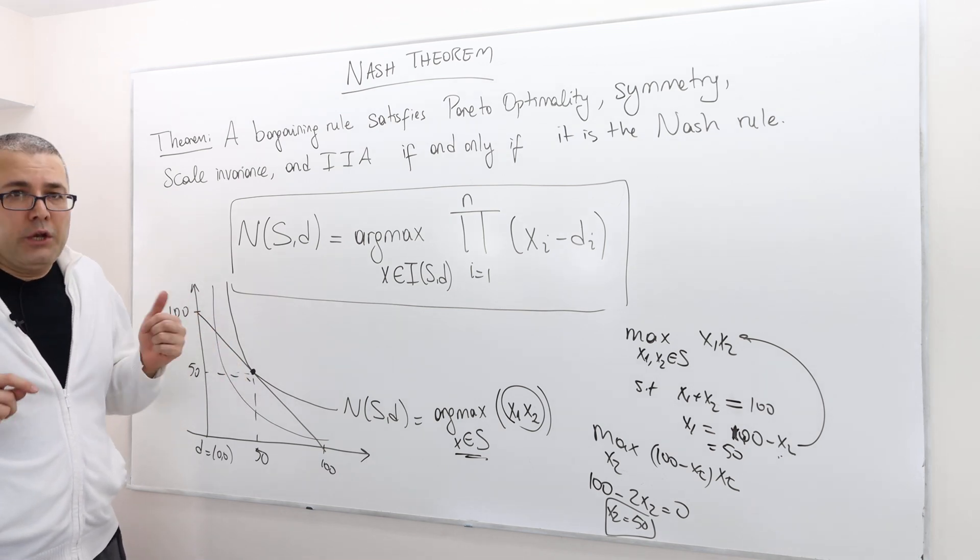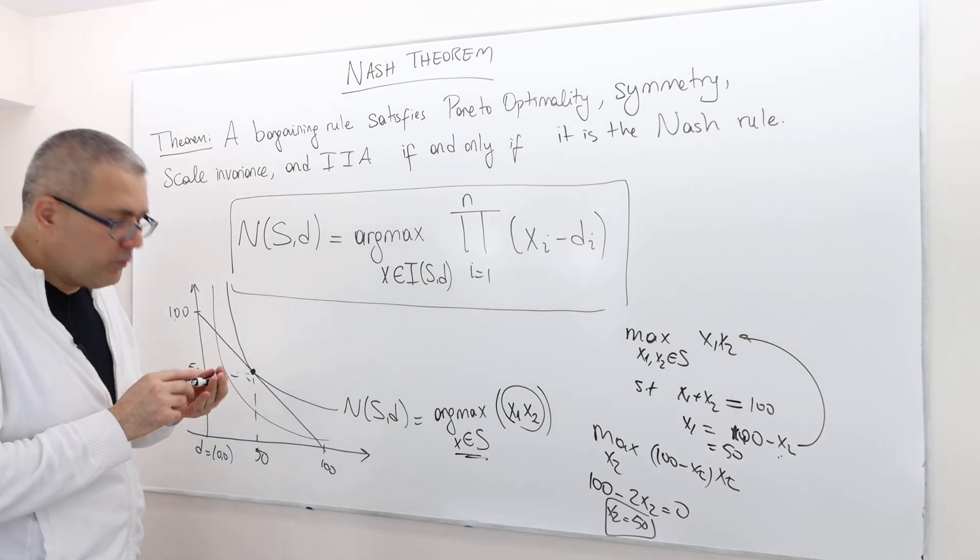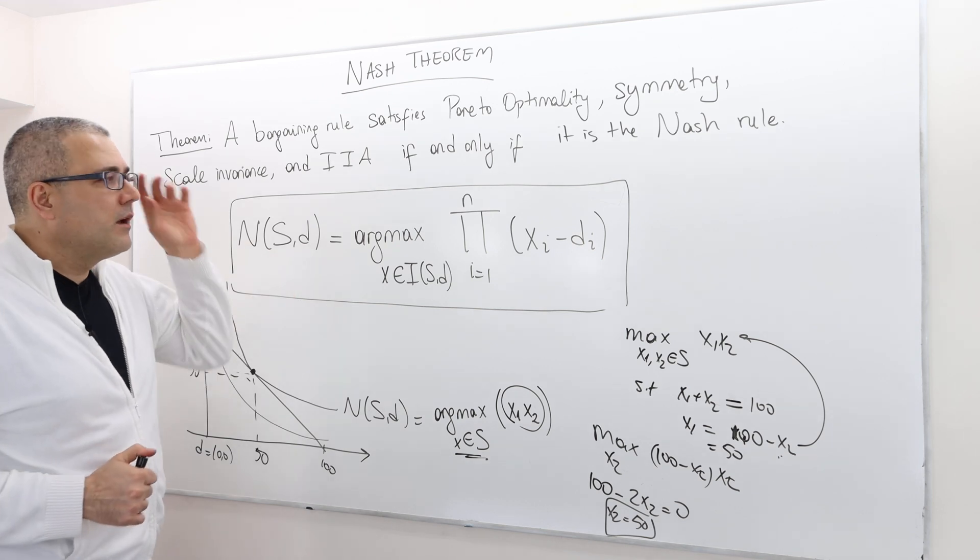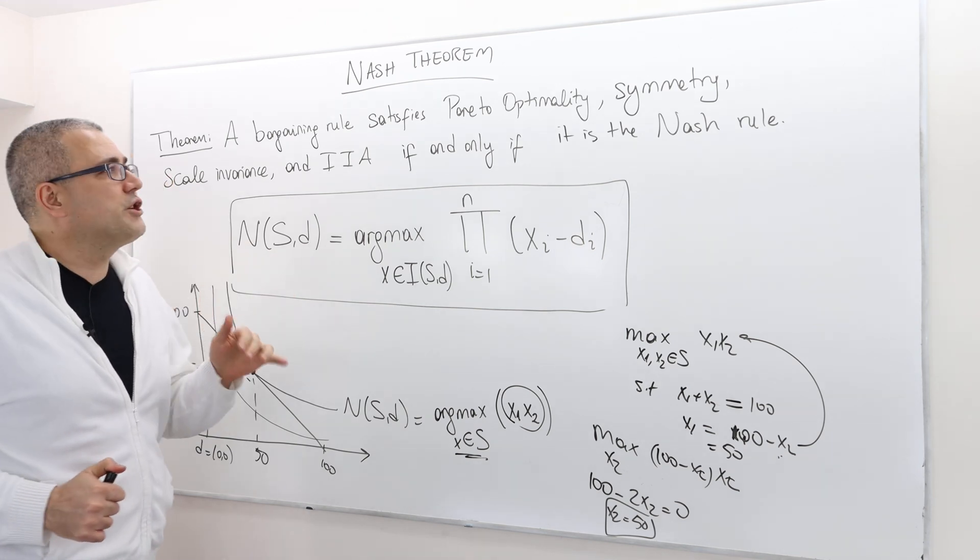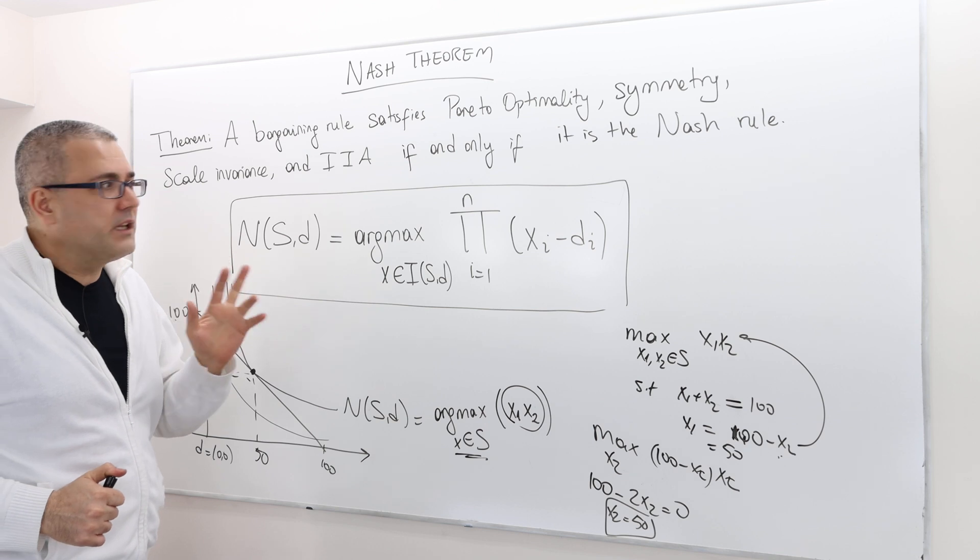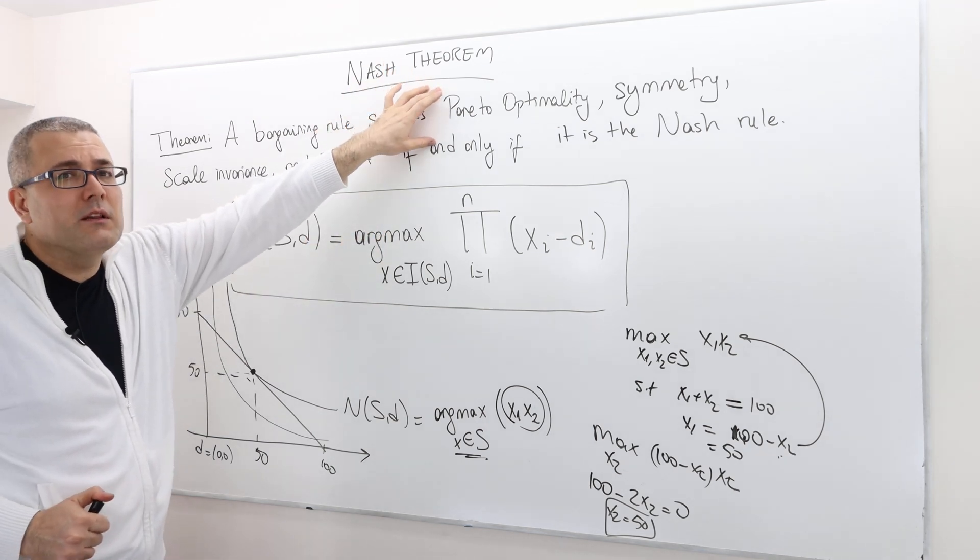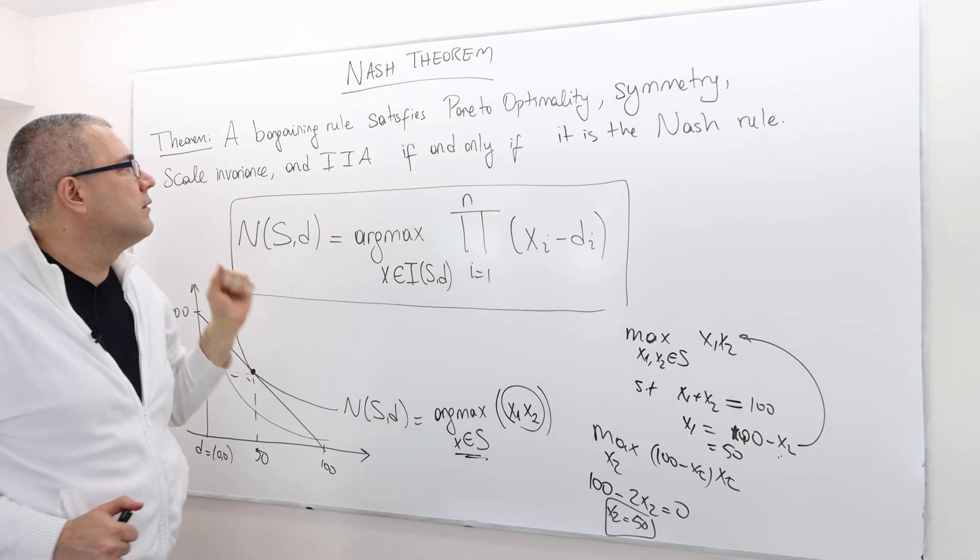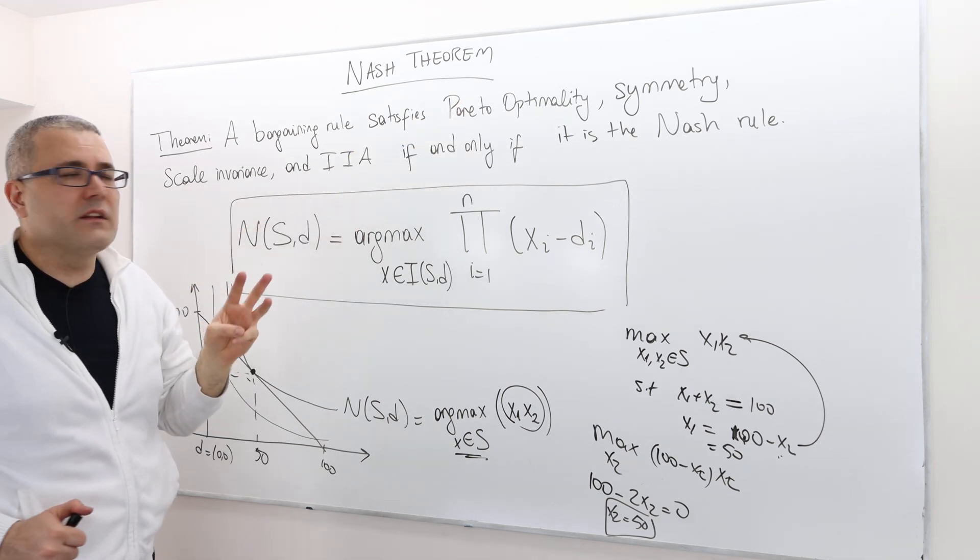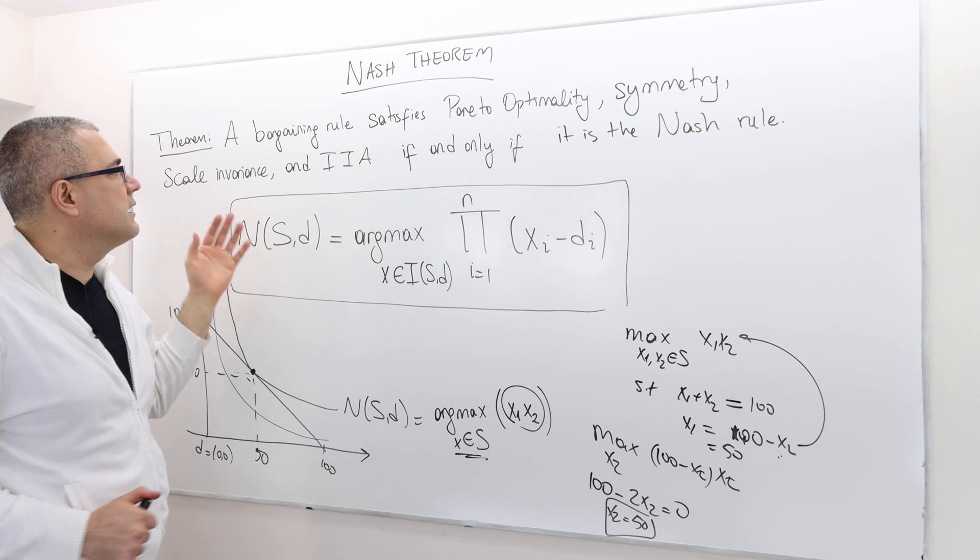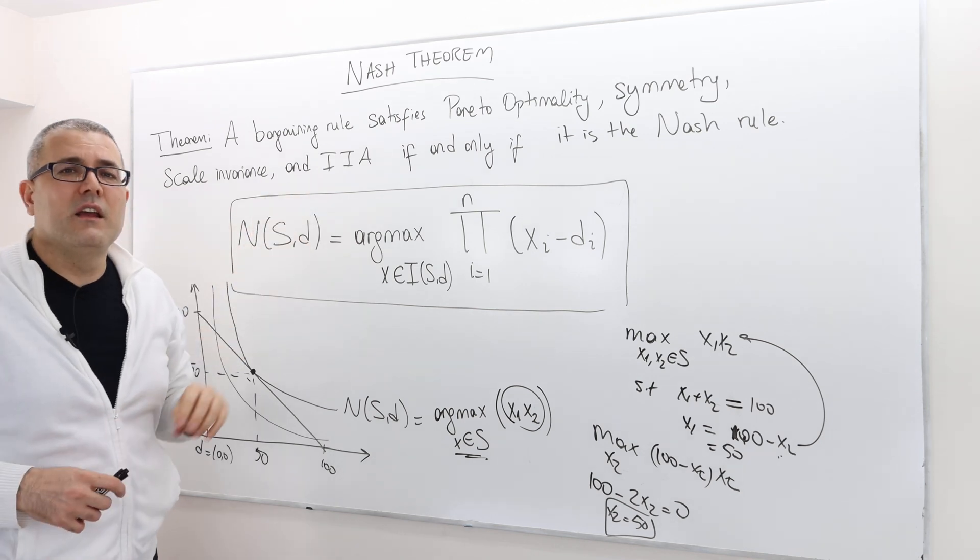Good. Well, obviously, we're not going to prove this theorem, but we should definitely check if, really, this rule is Pareto-optimal. One. Two. Symmetric. Three. Scale invariance. Satisfying scale invariance. And finally, IIA.